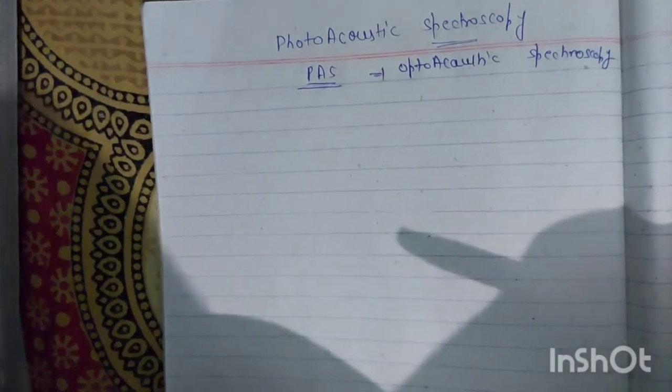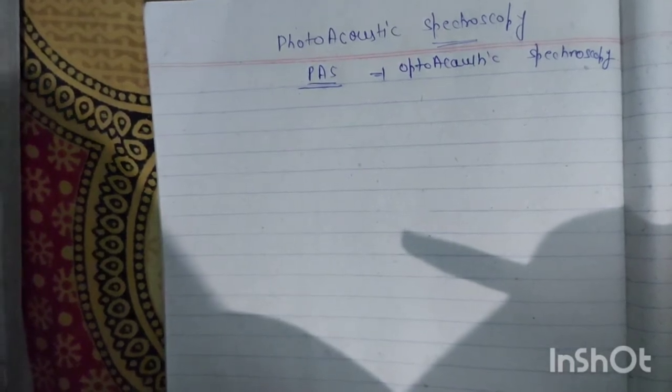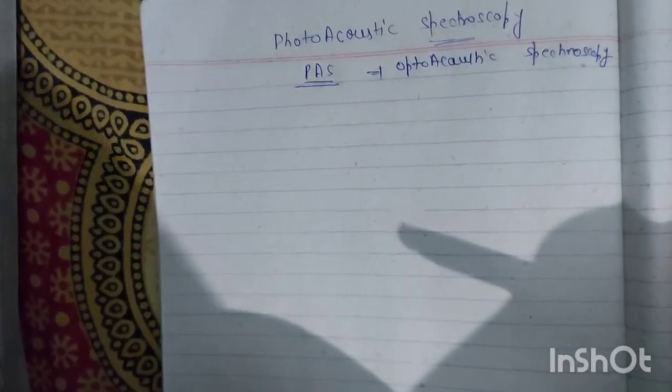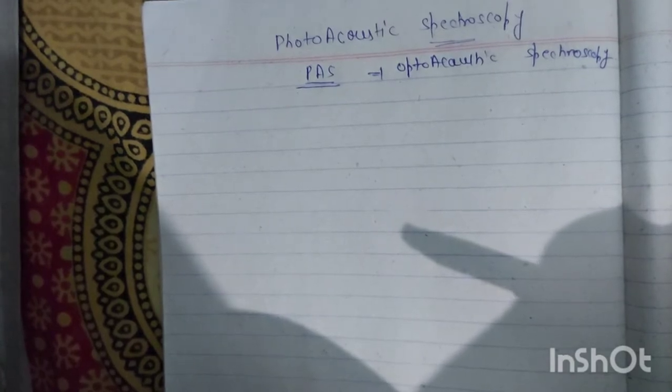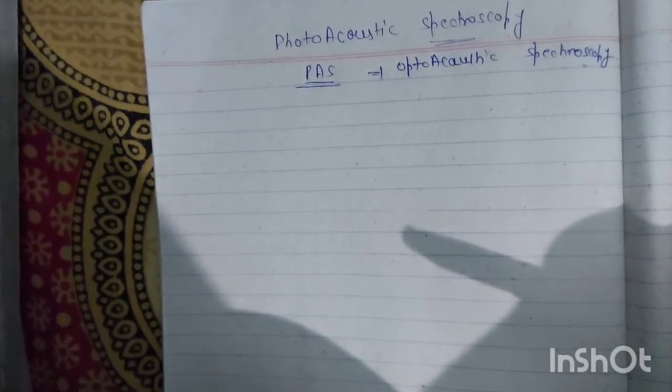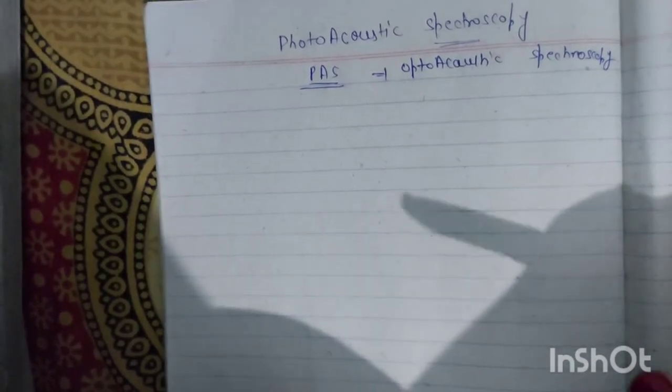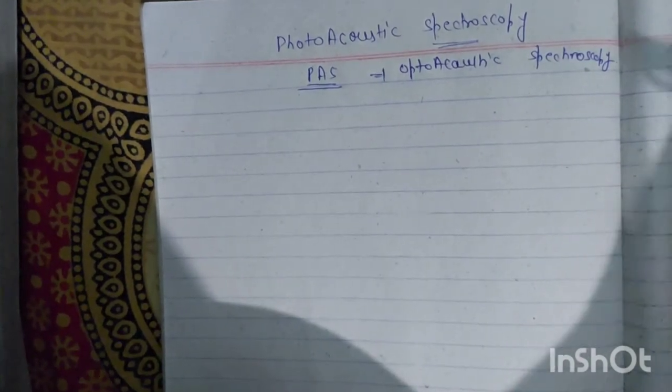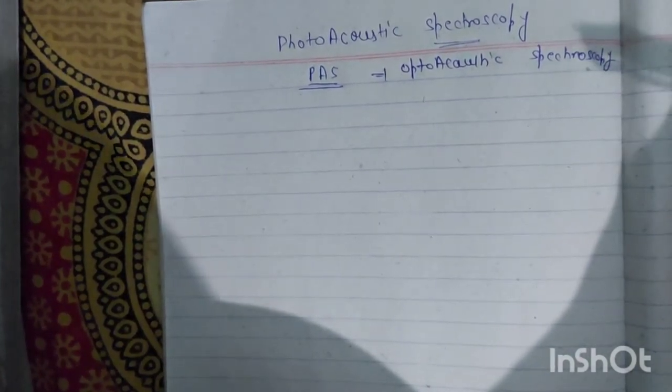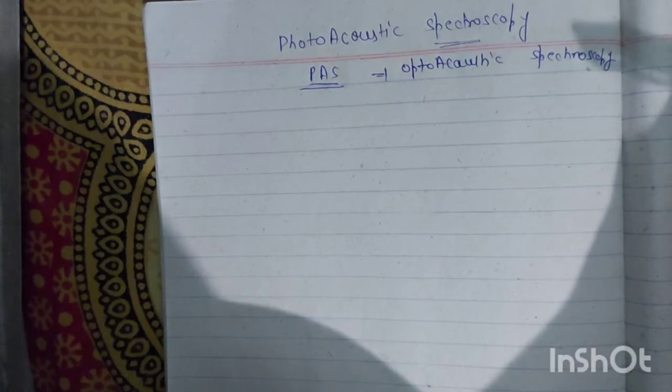First we have to understand what is spectroscopy. The most simple definition of spectroscopy is that if there is matter, we put radiation on it. Now absorption or excitation on it, we have to find the matter, and at the end we have to study the spectroscopy.